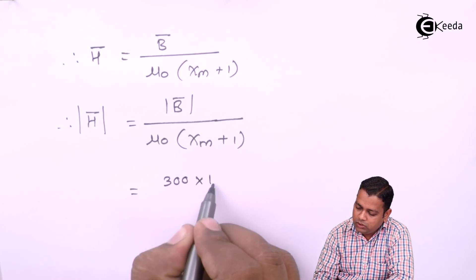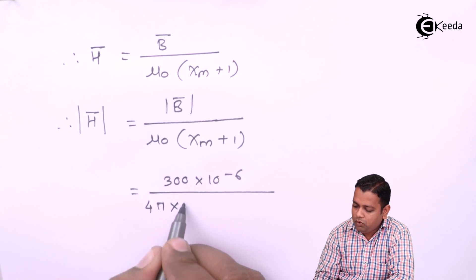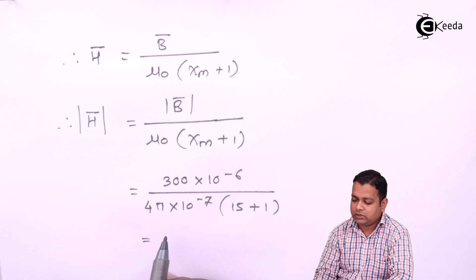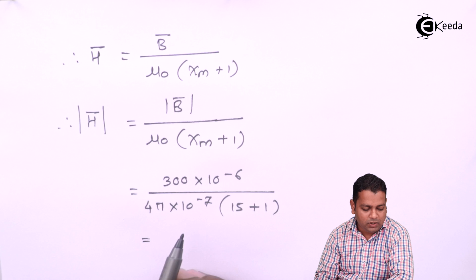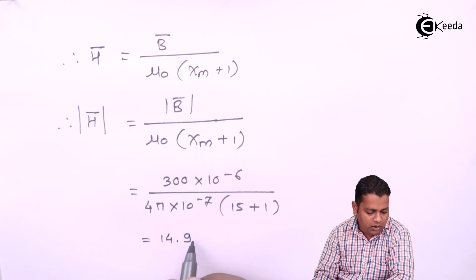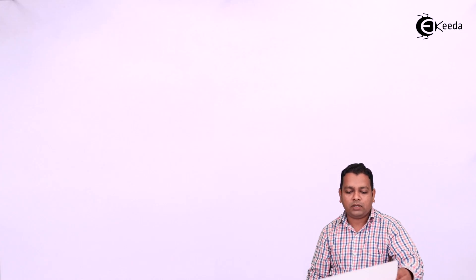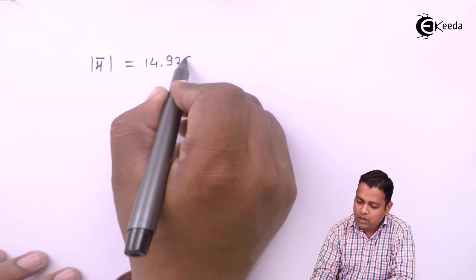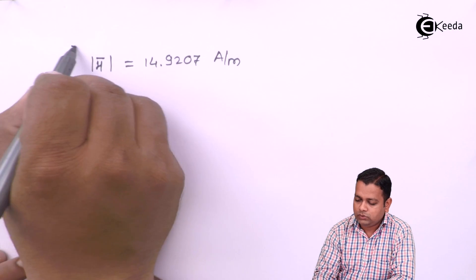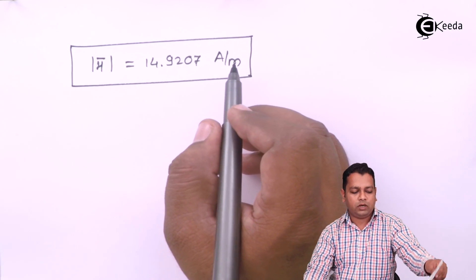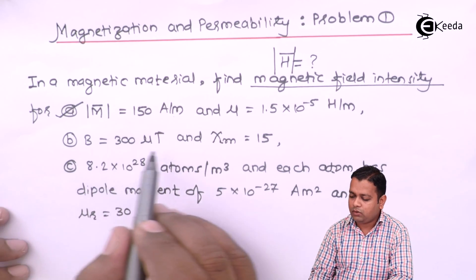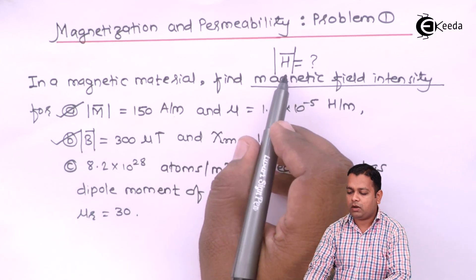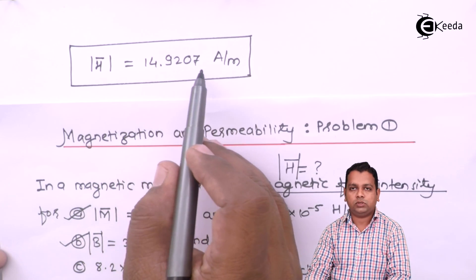This simple multiplication and division gives us the magnitude of magnetic field intensity as 14.9207 ampere per meter. The unit for magnetic field intensity is ampere per meter. So this is the required answer for part B: the magnitude of H bar equals 14.9207 ampere per meter.